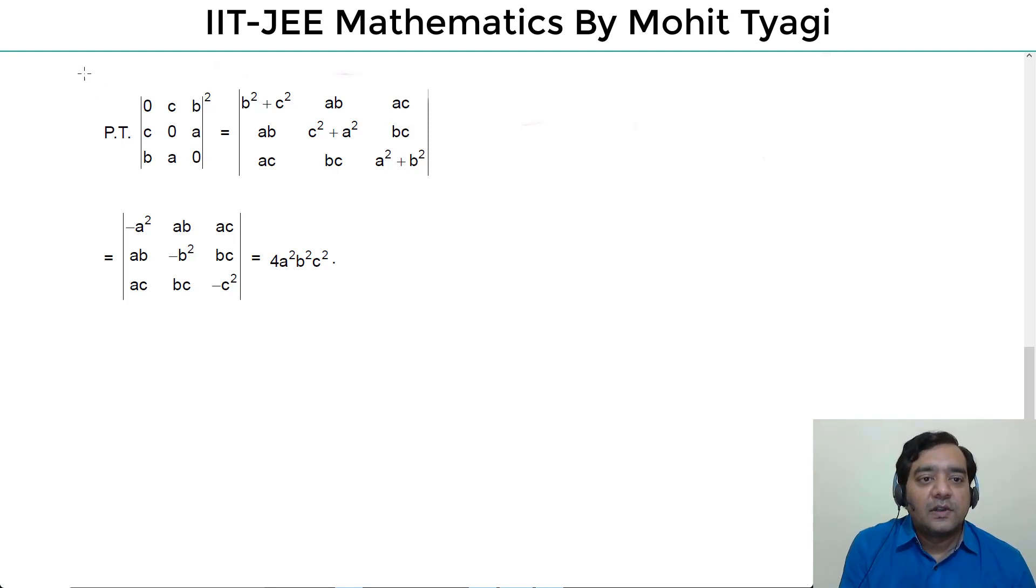Okay, let's move to the next question. It says prove that this determinant square is equal to this determinant, which is equal to this value. This is something like alpha equals beta equals gamma equals delta.